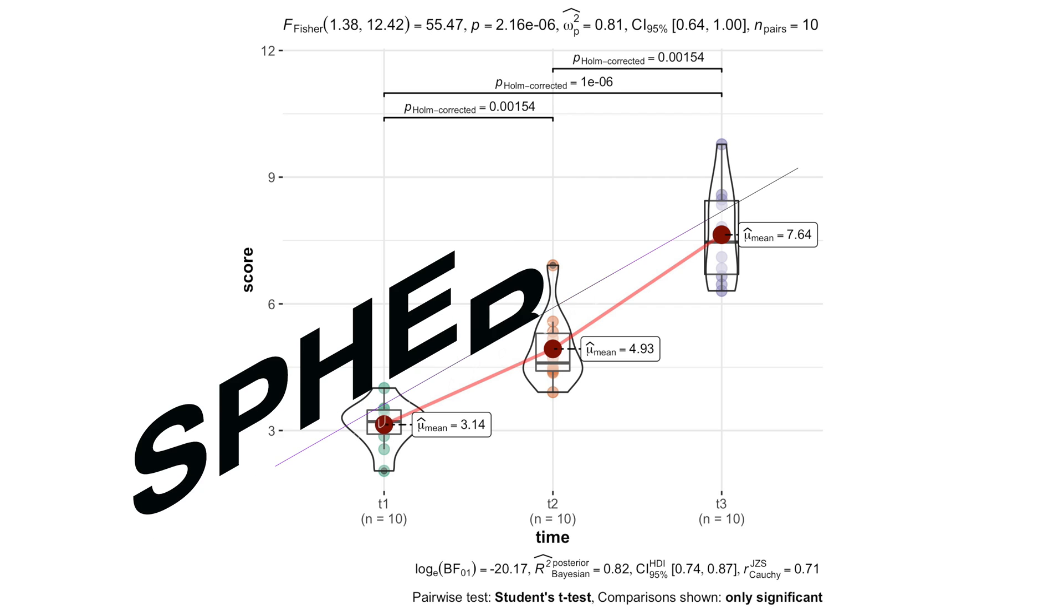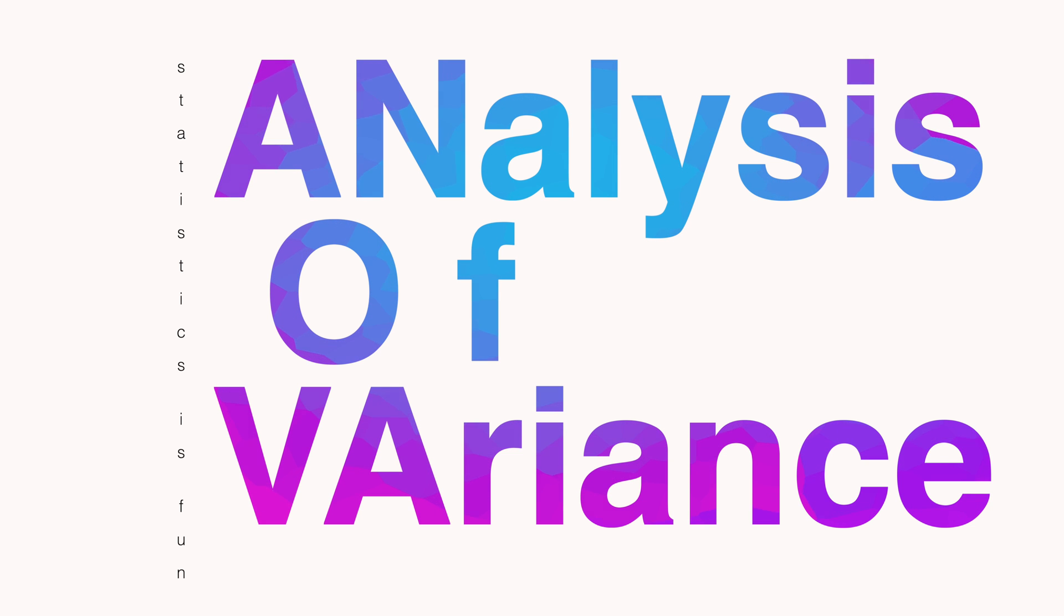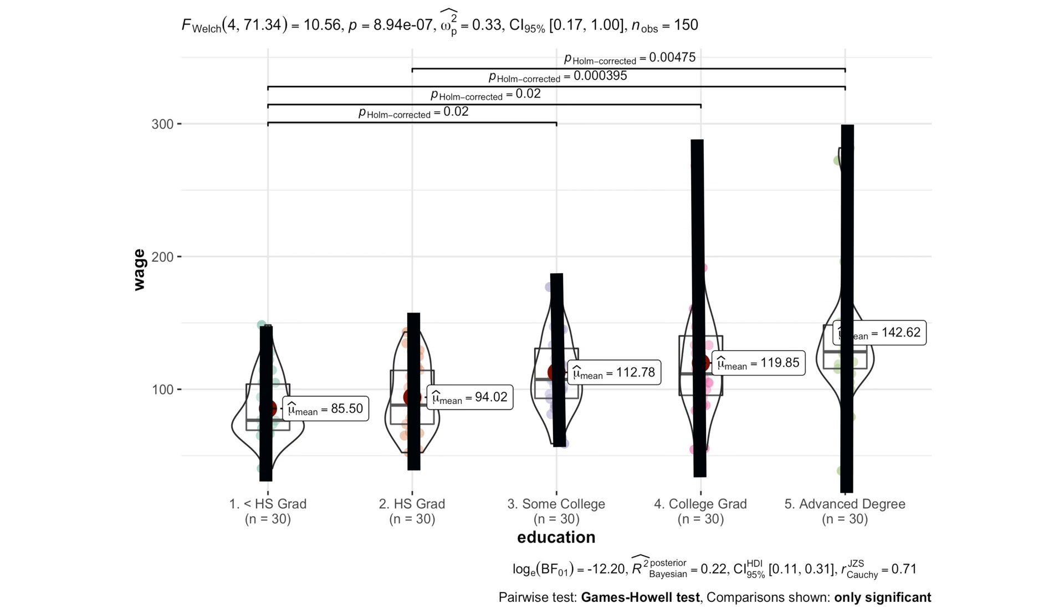Repeated measures ANOVA needs sphericity, where sphericity simply means that data spread inside of the groups is similar. Variance is important, because the name of our test, ANOVA, is actually the abbreviation of the analysis of variances. However, since most of the real-world data have different variances, ggwithinstats already accounts for sphericity by default.